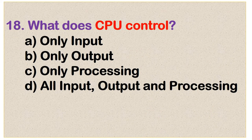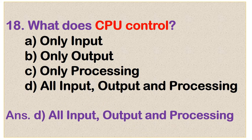Question number 18: What does CPU control? Options are only input, only output, only processing, or all input, output, and processing. Option D is the correct answer: all input, output, and processing.